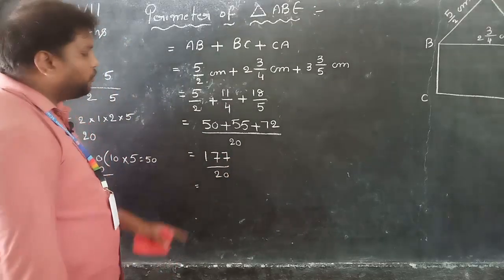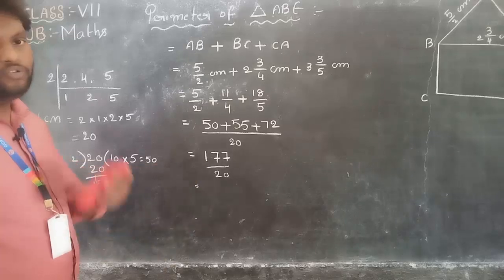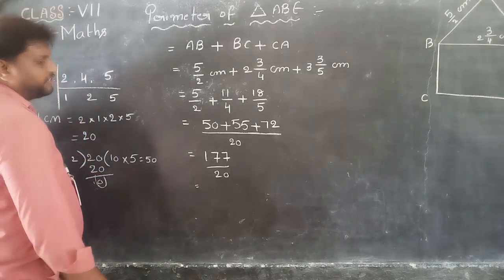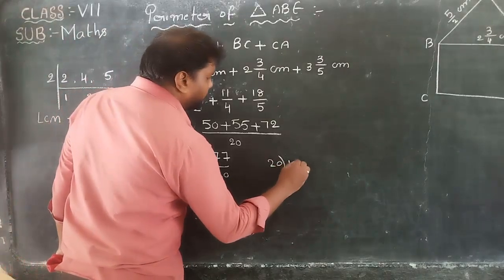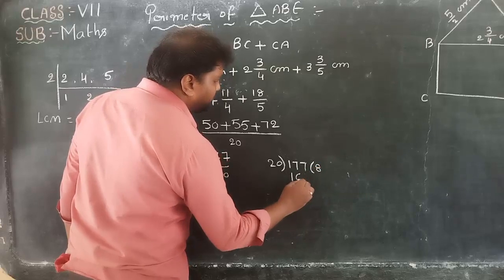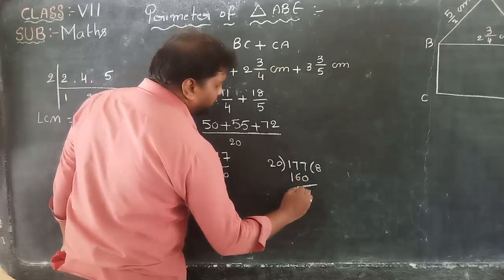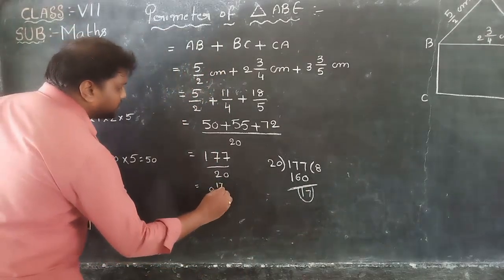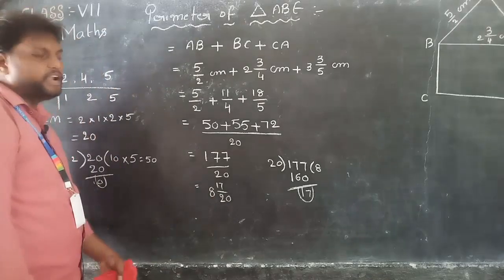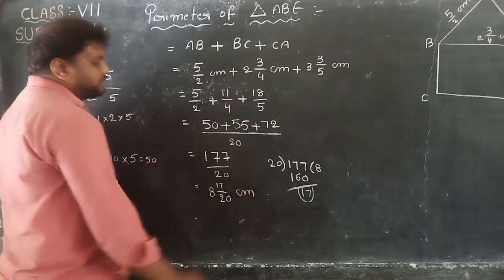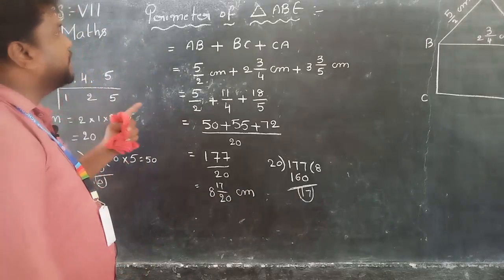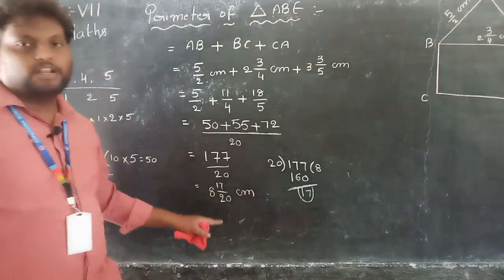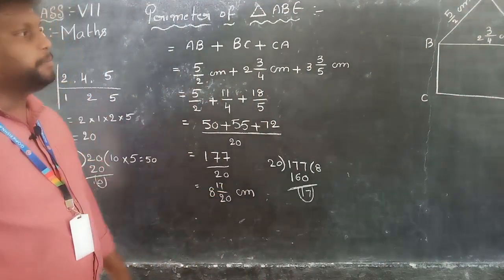177 by 20 — convert into a mixed fraction. Do the division: 20 into 177. 20 times 8 = 160, remainder 17. So the answer is 8 and 17/20 centimetre. The perimeter of triangle ABE equals 8 and 17/20 centimetre.